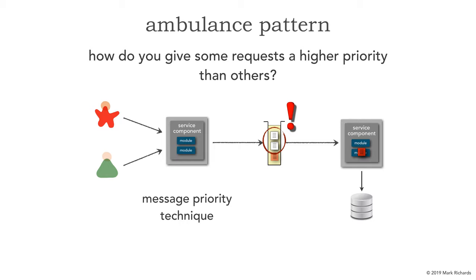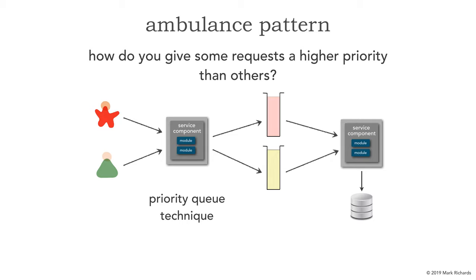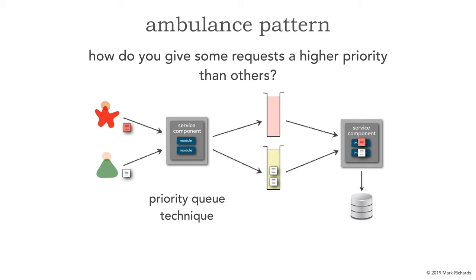Usually those transactions may time out. A better approach than leveraging message priority is to use a prioritization queue. The priority queue technique splits that queue into two pieces — the yellow being our normal everyday processing and the red being a high priority channel. As we start getting normal messages being processed, those go through the standard everyday channel. When a high priority message comes in, that service component reroutes it to another queue. Without having to play around with message priority, both messages can now be processed at the same time, not slowing down the normal message flow, but allowing the high priority message to actually get through.